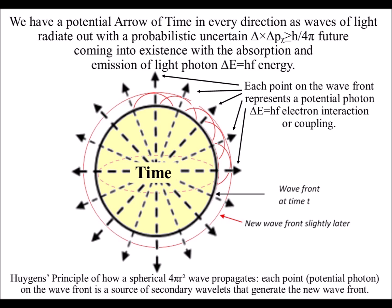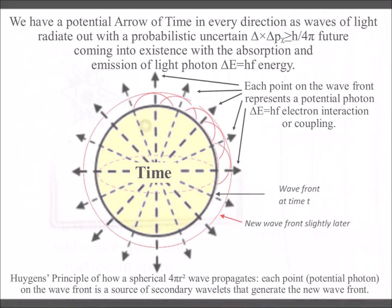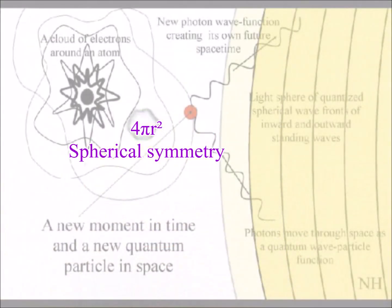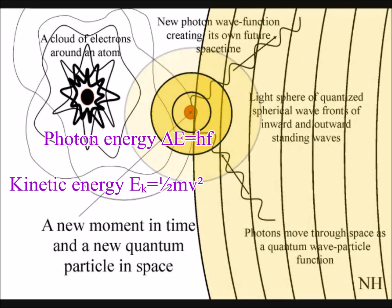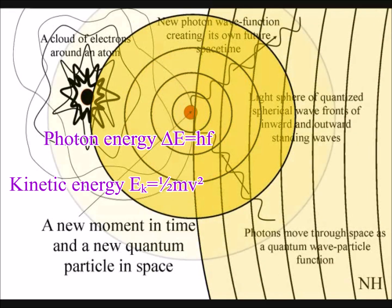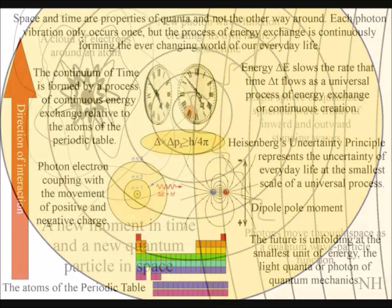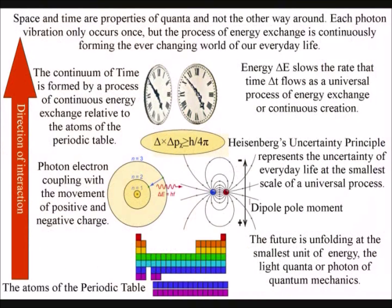This concept is supported by the fact that light-photon energy is continuously exchanging into the kinetic energy of matter in the form of electrons. Kinetic energy is the energy of motion, the energy of what is actually happening as the future unfolds.